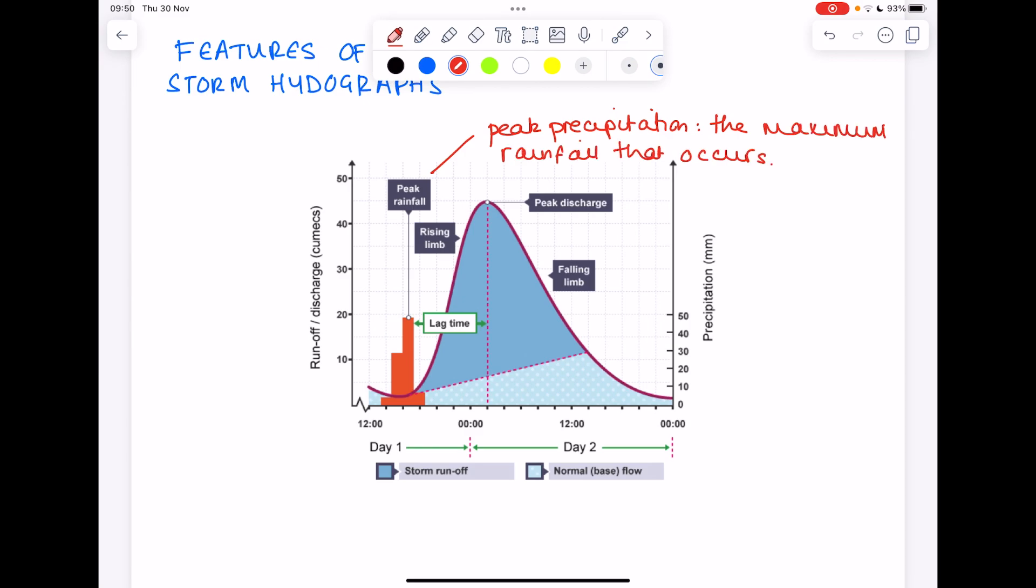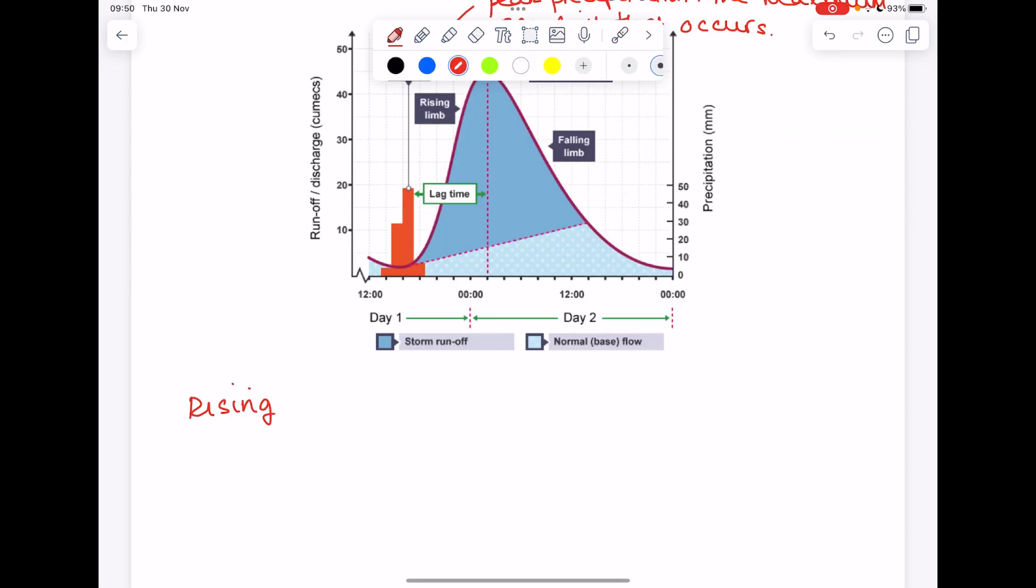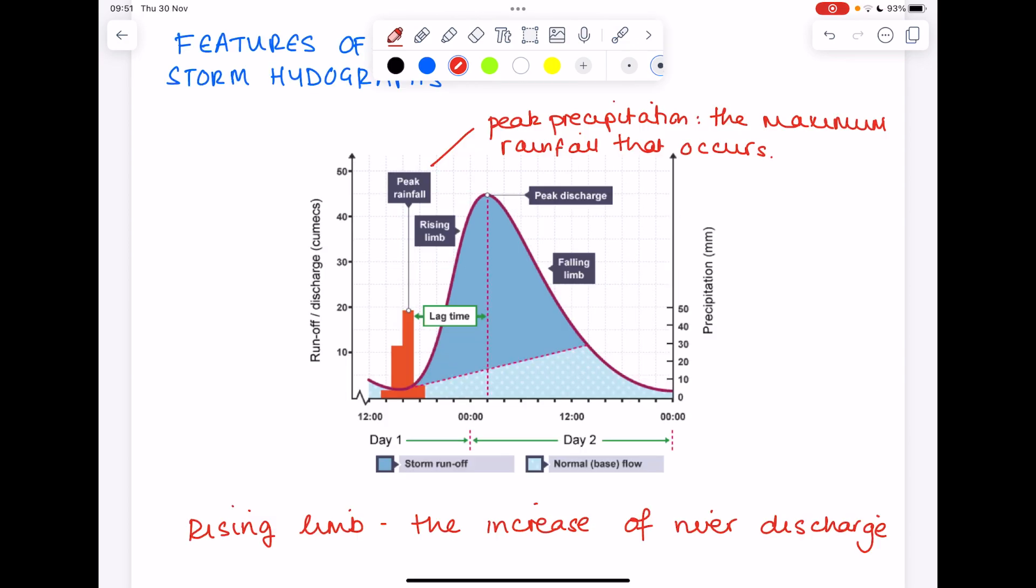Moving over to the graph line as opposed to the bar chart, it always has this characteristic shape. You can see this portion of the graph where it is steeply increasing that gradient. We call that the rising limb, and this is the increase of river discharge. It doesn't necessarily have to occur straight after precipitation.